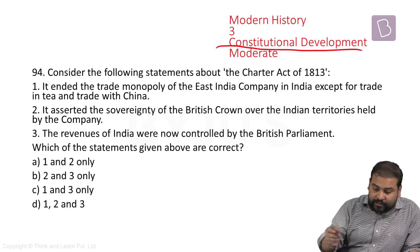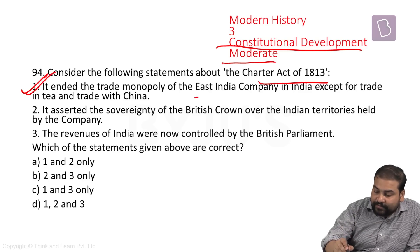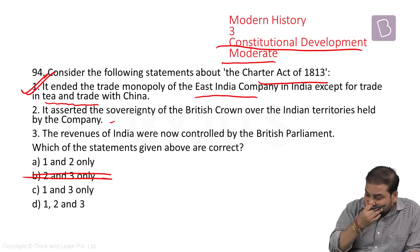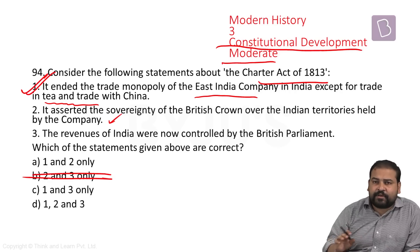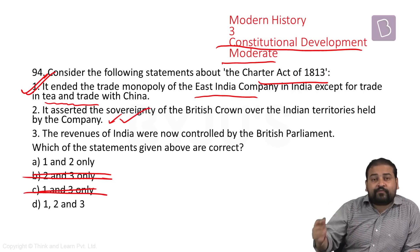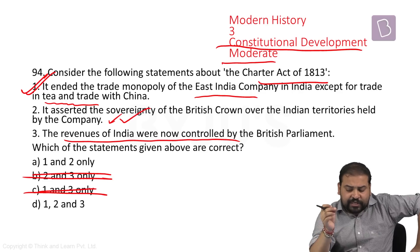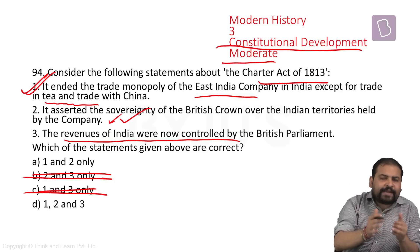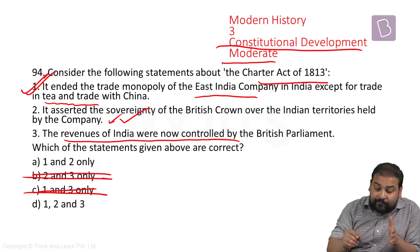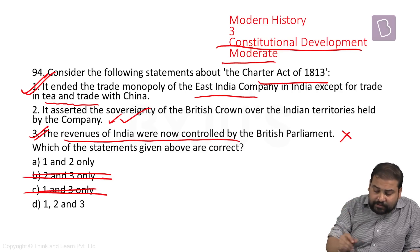Another question from constitutional development in modern history — again moderate. Charter Act of 1813: point one, it ended the monopoly of the East India Company except for tea and trade with China — absolutely correct, so B is not the answer. Point two, it asserted the sovereignty of the British Crown over Indian territories held by the company — also a correct statement. Point three, revenues of India were now controlled by the British Parliament — this is an ambiguous, wrong statement, because revenues did not directly go into control of the British Parliament as the company was still there. No standard books mention this clearly. So we negate point three and the answer is A.